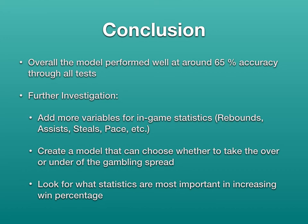For further investigation, I would look to add more variables such as per-game rebounds, per-game assists, per-game steals, and average pace coming into the games to help predict. Also, creating a model that would choose whether to take the over-under on the gambling spread would be really cool, since these spreads are pretty tough to predict. Lastly, looking at which statistics are most important in increasing win percentage could help teams analyze the data and decide how to go about improving.